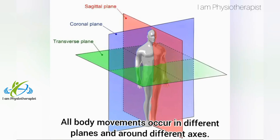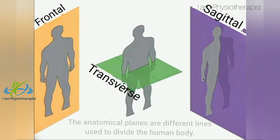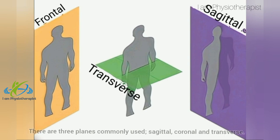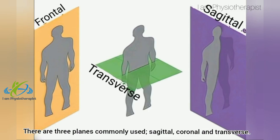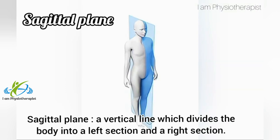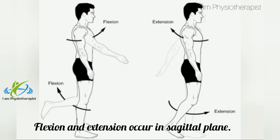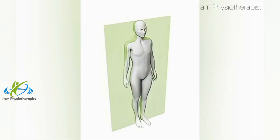All body movements occur in different planes and around different axes. A plane is an imaginary flat surface running through the body. There are three planes commonly used: sagittal, coronal, and transverse. The sagittal plane is a vertical line which divides the body into a left and right section; flexion and extension occur in the sagittal plane.